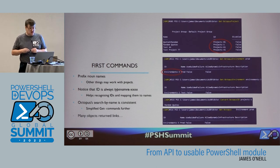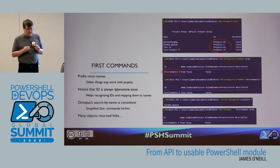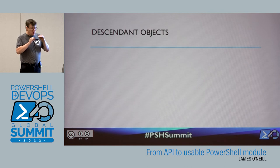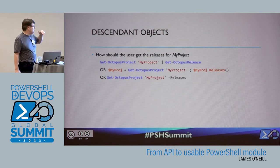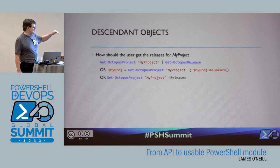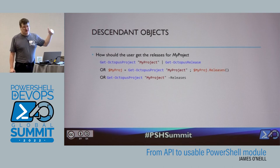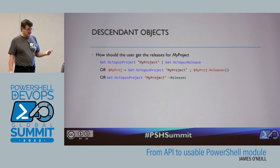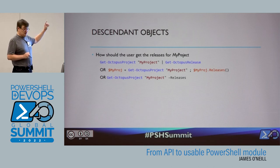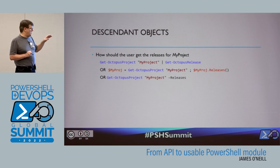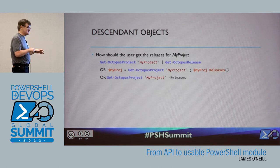That was easy. The links were easy but they threw up another question. Objects are descended from each other — if I want to get the releases for a project, I can think of at least three different syntaxes: do I get the project and pipe it into something that gets a release, do I get the project object and call a method on it, or do I make it part of getting the project? The answer is all three. I'm a great believer in users being able to use whichever way works for them at the time. I find that I use all three, and I'm quite glad I coded them all up. The nature of this particular API made that easier than some others.